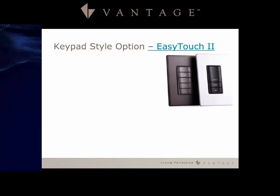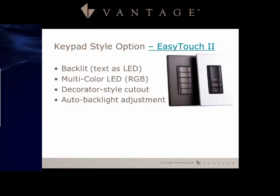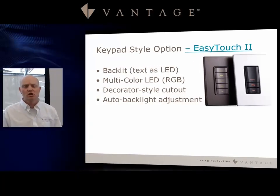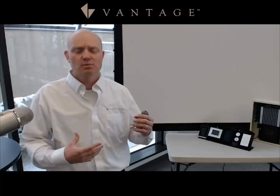The first is the EasyTouch 2, which has a backlit text LED with engraved buttons. It has a multi-color RGB LED, so by mixing red, green, and blue you can achieve all different types of colors for the backlight. It is a decorator-style cutout that matches well with outlets. It has auto backlight adjustment — a great feature that allows the keypad to be less bright at night in a dark room and brighter during the day when there's more ambient light.